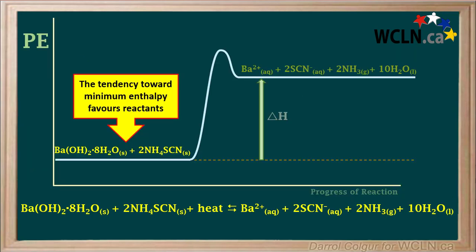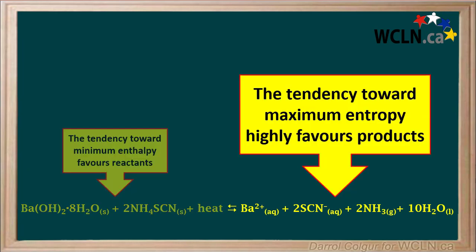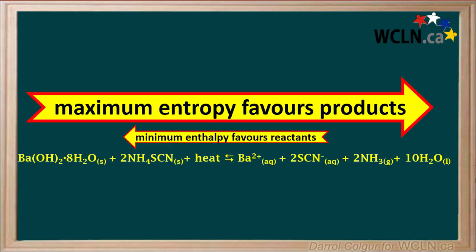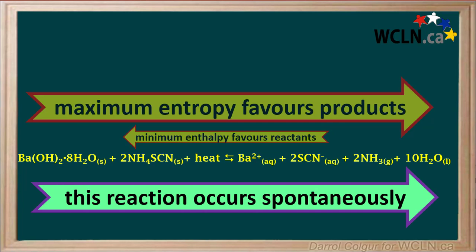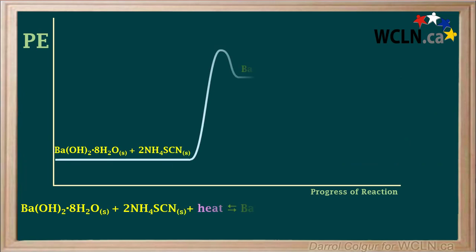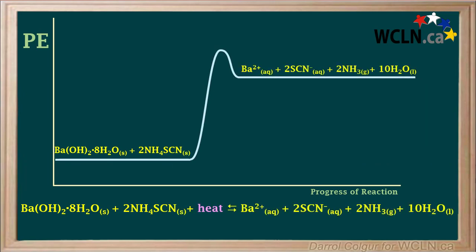So even though the tendency toward minimum enthalpy favors the reactants in this reaction, the tendency toward maximum entropy highly favors the products. Because there's such a huge increase in entropy as products are formed, the effect of maximum entropy favoring products predominates over minimum enthalpy favoring reactants, and this reaction occurs spontaneously in the forward direction. And as the reaction proceeds, it absorbs energy from the surroundings and causes the temperature to decrease.